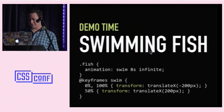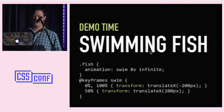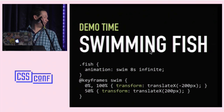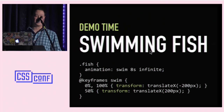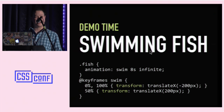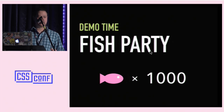Having shown these two demos, you might be thinking those fish were swimming just fine in both demos. And you'd be absolutely correct. To be honest, this MacBook Pro is going to have no problems animating 20 small fish around a screen, even with terrible CSS. So let's push things a little further.